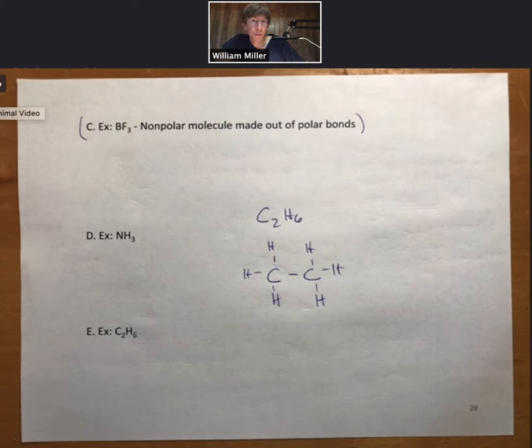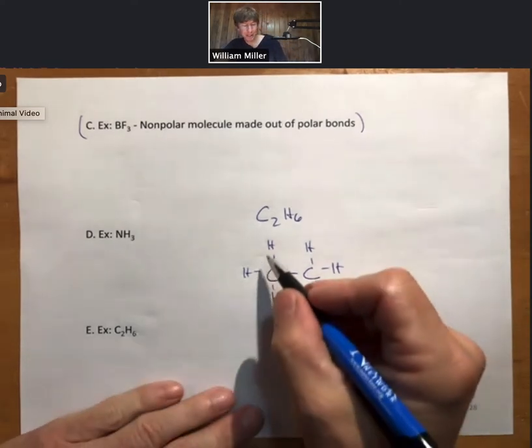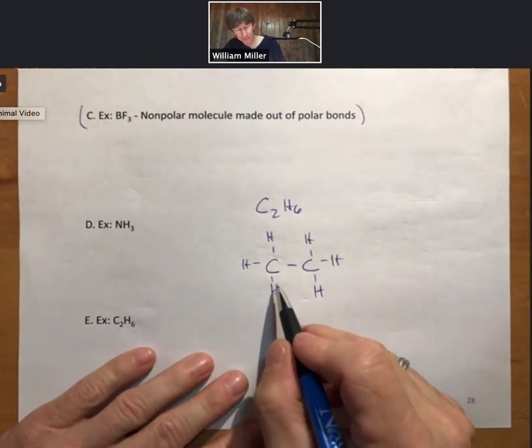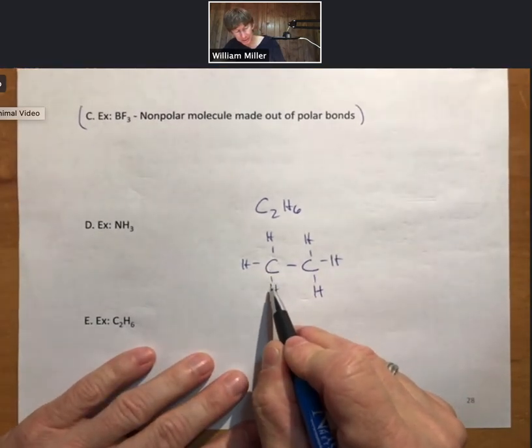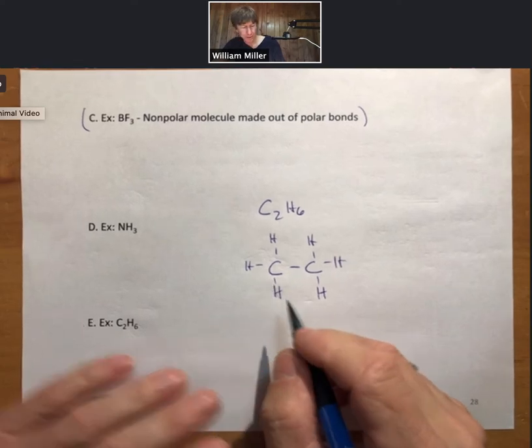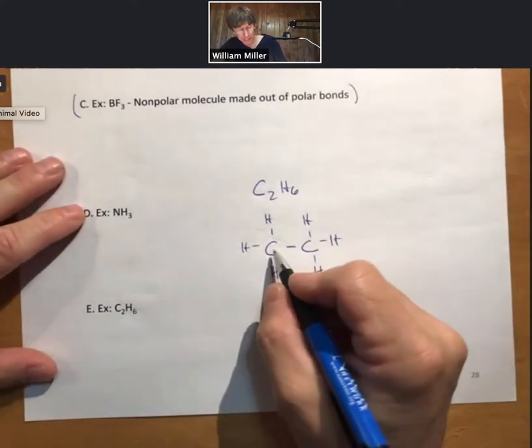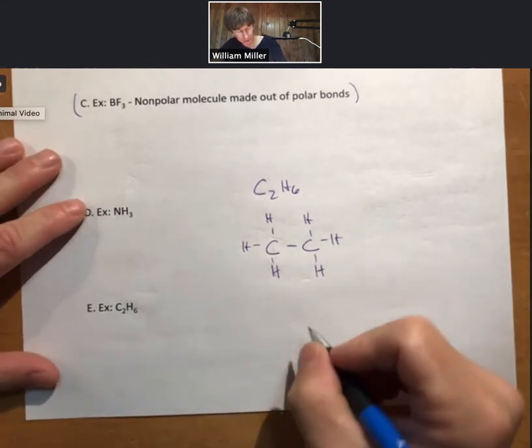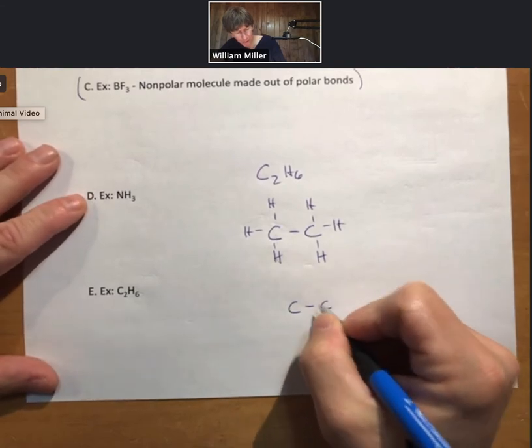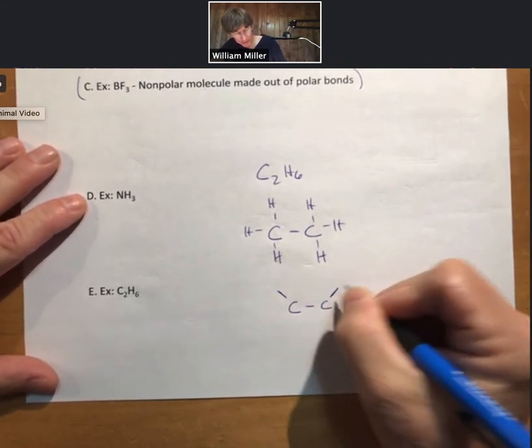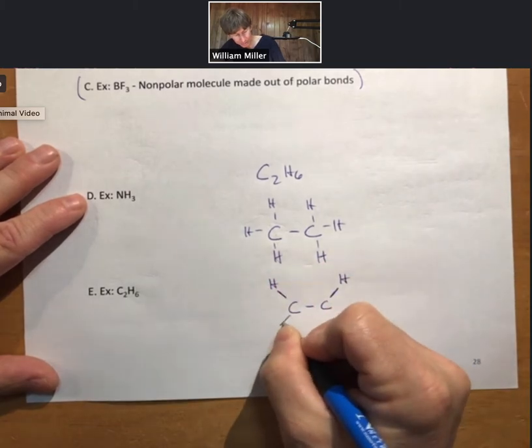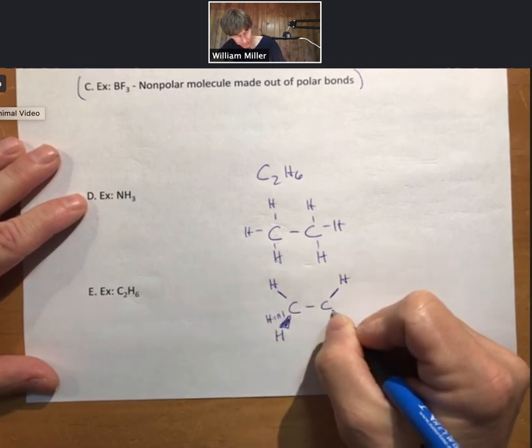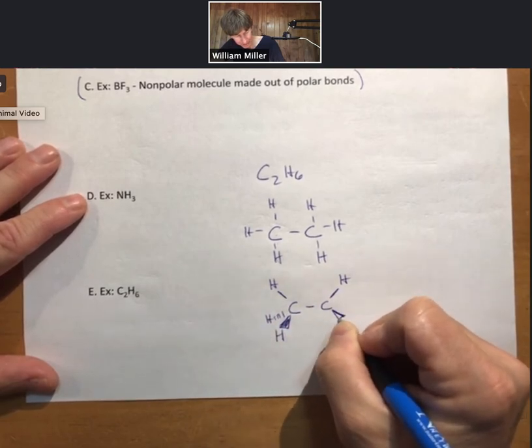When you have more than one carbon, connect the carbons to each other, then there's only hydrogens that can go around it. In this particular case, let's draw the shape. I have carbon with one, two, three, four things, that's tetrahedral. Same with the other carbon. I would not ask you to draw two tetrahedrals connected to each other, but we can do it. Okay.